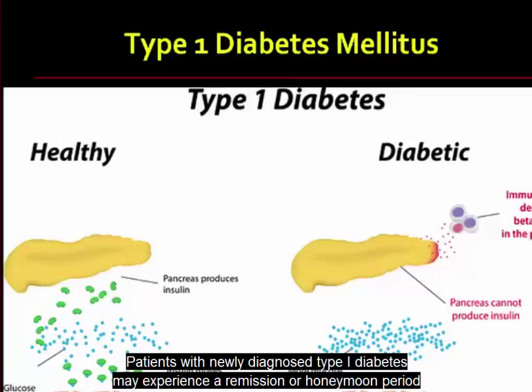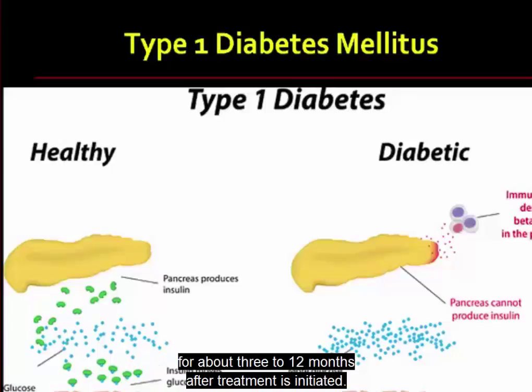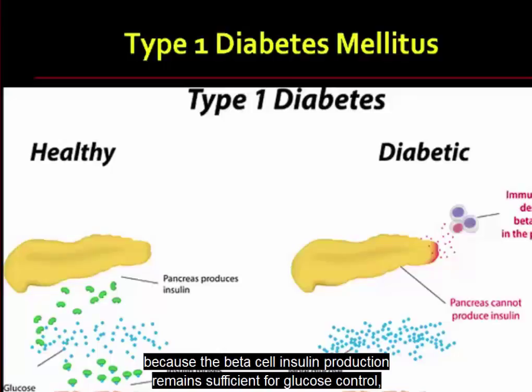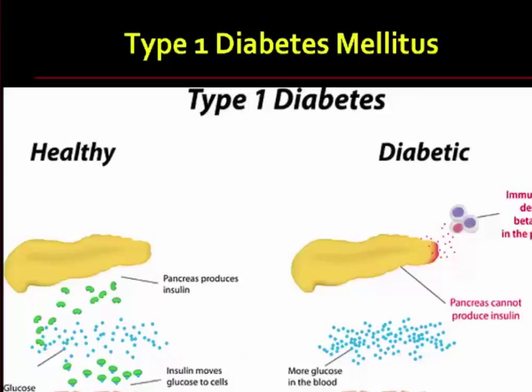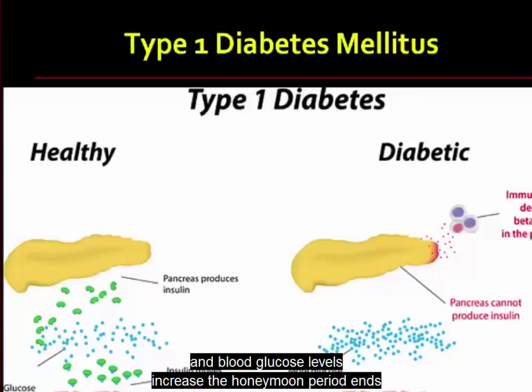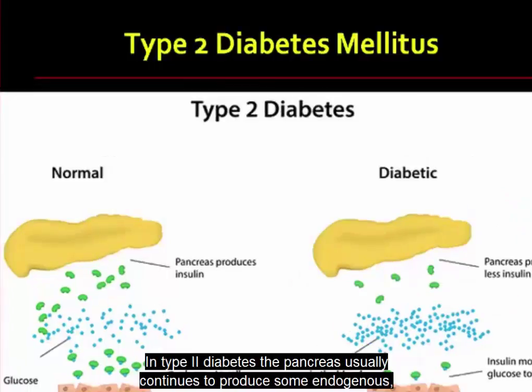Patients with newly diagnosed type 1 diabetes may experience a remission or honeymoon period for about 3 to 12 months after treatment is initiated. During this time, the patient requires very little injected insulin because the beta cell insulin production remains sufficient for glucose control. But eventually, as more beta cells are destroyed and blood glucose levels increase, the honeymoon period ends and the patient will require insulin on a permanent basis.